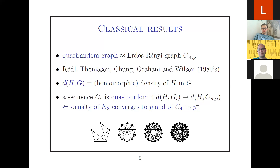Throughout this talk I will look at the density of substructures. I want to say that the density of a graph H in a graph G is the probability that a random mapping of the vertices of H to the vertices of G yields a homomorphism. For example, if H is an edge, the density is just the edge density of the graph. For C₄, I map its vertices to my large graph randomly and look at the probability that the mapping is a homomorphism — that is, that consecutive vertices are connected.